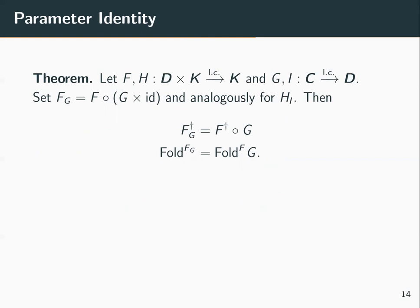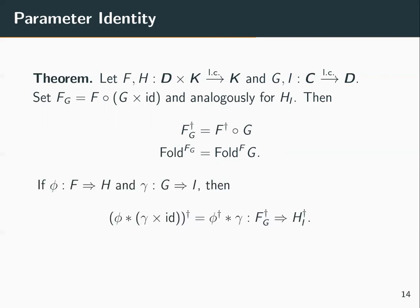More concretely, given a functor F from D × K to K and a functor G from C to D, the parameter identity tells us that the dagger of their composition equals the composition of the dagger of F with G. We also have, as a new result, that the fold isomorphism respects the parameter identity. And we have new two-categorical structure where natural transformations too respect the parameter identity.